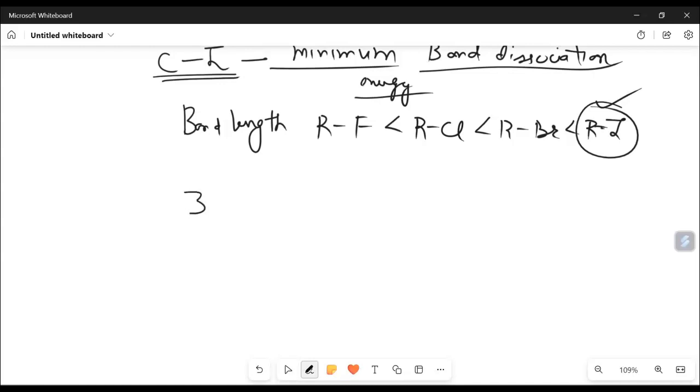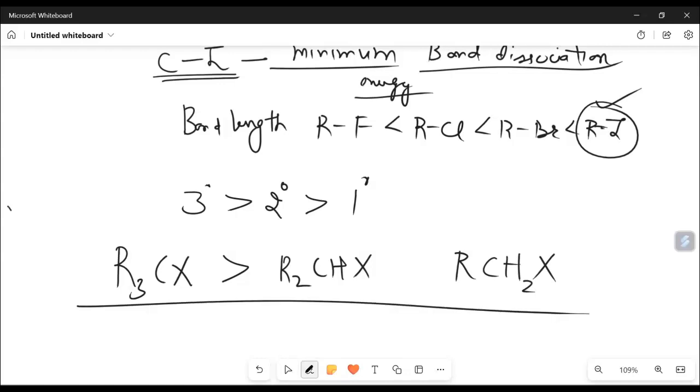The main problem is the 3 degree is more reactive than 2 degree and 1 degree because of the stability of carbocation. It means R3CX is more reactive than R2CHX, then RCH2X. So order of reactivity, 3 degrees more reactive than 2 degrees more reactive than 1 degree.